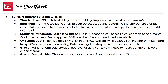Glacier is for long-term cold storage — it's archival storage and very cheap. The trade-off is that it takes between minutes to hours to access your files when you need them. Glacier Deep Archive is the cheapest storage class on the list, but you can't access your files for up to 12 hours — that's how long it takes before you can use them.